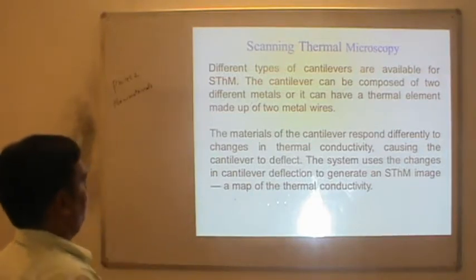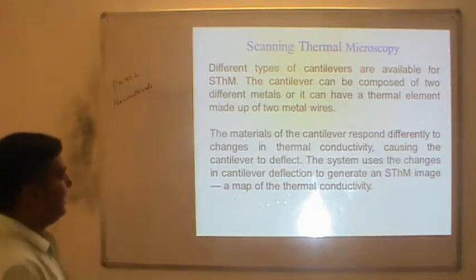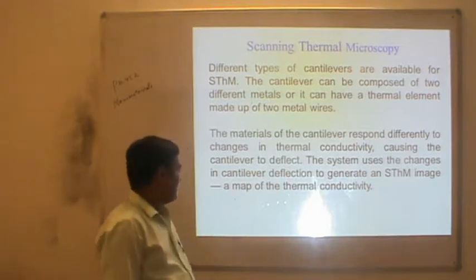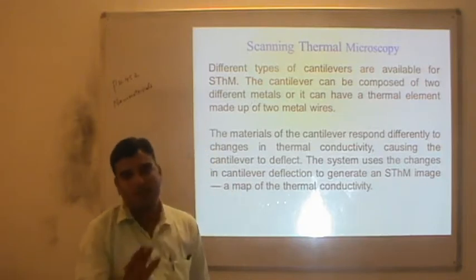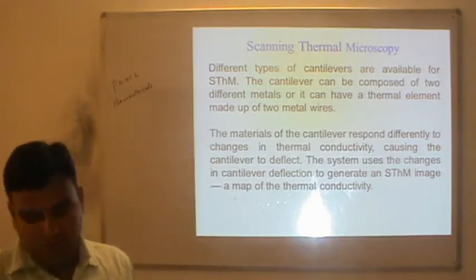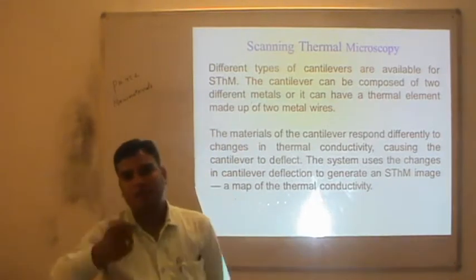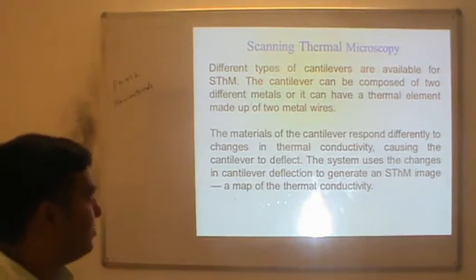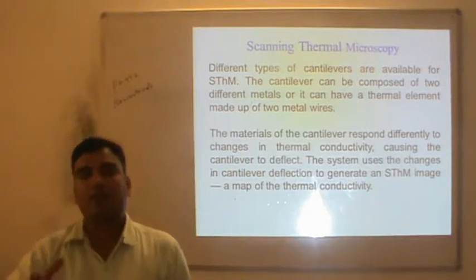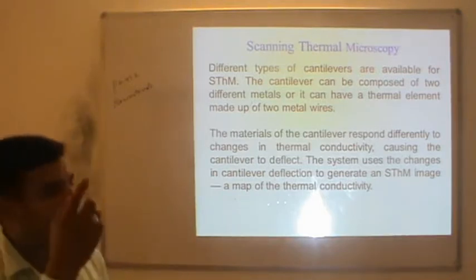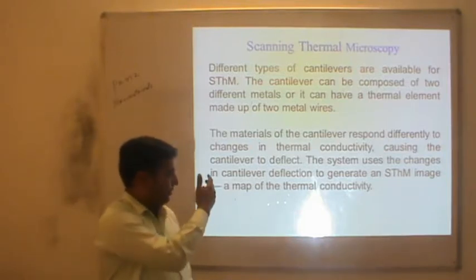The material of the cantilever responds differently to changing thermal conductivity, causing the cantilever to deflect. The system uses the change in cantilever deflection to generate an SThM image. Whenever the cantilever scans the surface, a laser beam is drawn from a laser source, and any deflection observed in the cantilever is detected by the change in the path of the laser. By measuring the deviation in the laser beam, you can identify the thermal properties of the material.